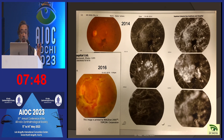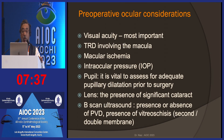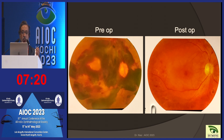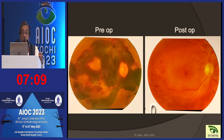We must remember to intervene early. If vitrectomy or good laser had been done in 2014, blindness could have been avoided. In another case, there was pre-retinal hemorrhage spread all over the posterior pole, but the intact posterior hyaloid face was visible. Surgery was straightforward — removing the posterior hyaloid face and flushing out the blood — and since the macula was not involved and traction was not present, the patient retained very good vision.